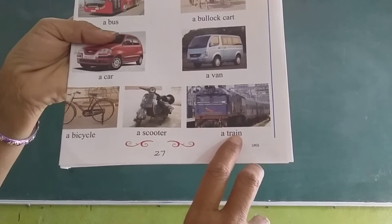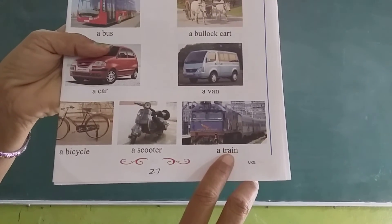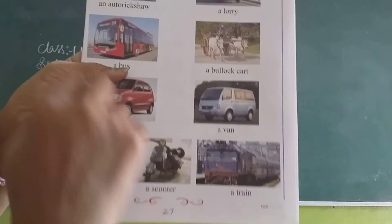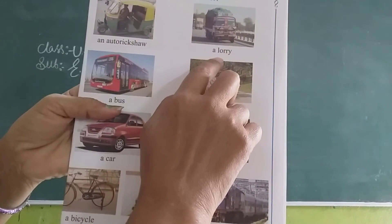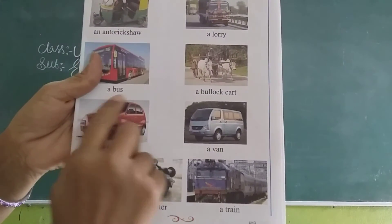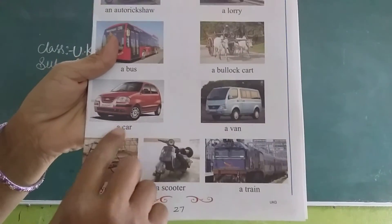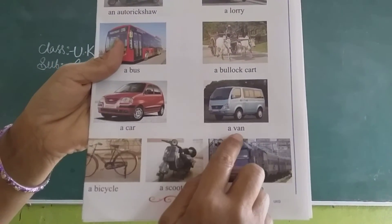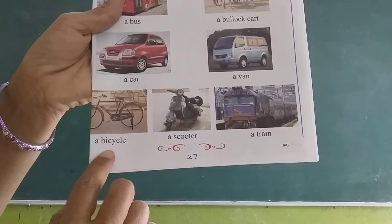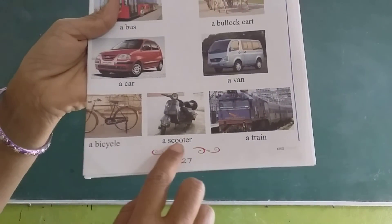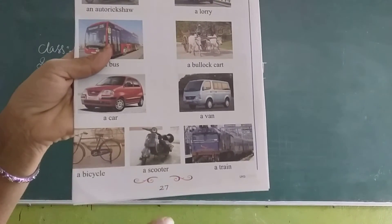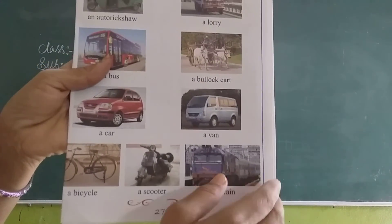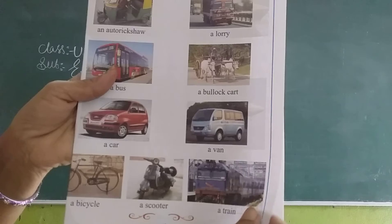Train. T-R-A-I-N. Train. One more time, listen children: Auto rickshaw, Lorry, Bus, Bullock cart, Car, Van, Bicycle, Scooter, Train. These will move on the roads — means on the land. So these are means of land transport.